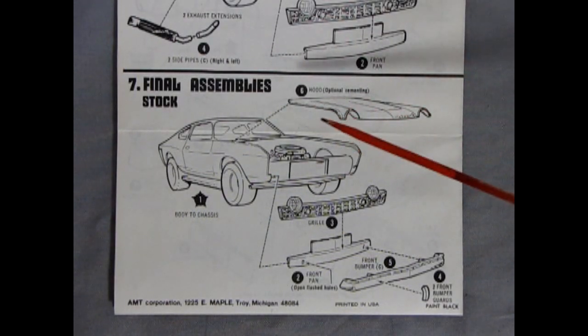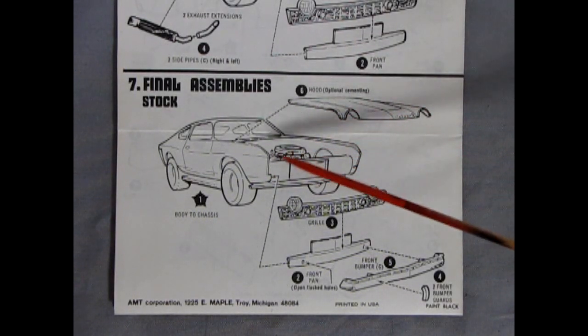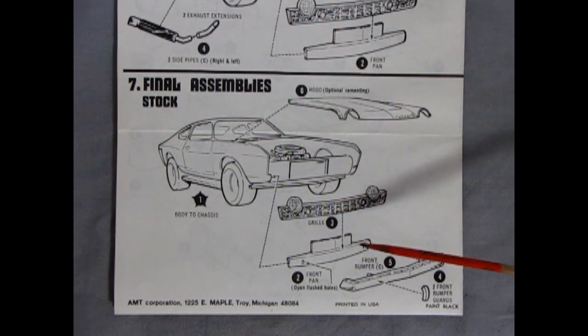Panel seven shows our final assemblies for the stock version. Here you have your hood going in place, your grille, your front pan, and your bumper with the two bumper guards.